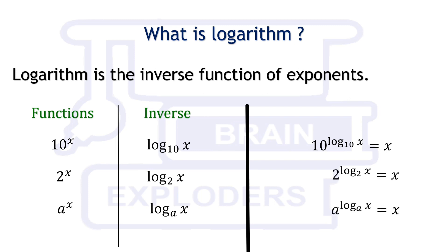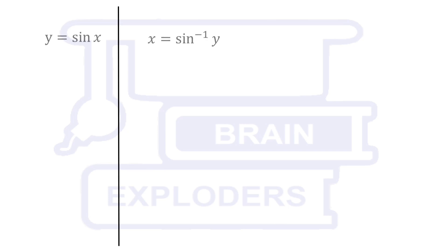Inverse of any function is used when value of that function is given and we have to find that for what value of variable in it this value of function is possible. In other words, we can say that if y is equal to sin x then x is equal to sin inverse y, if y is square of x then x is square root of y, and so on.